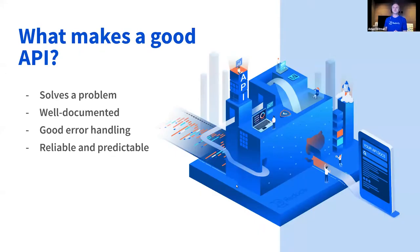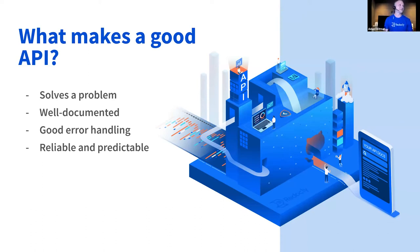So I'm going to start off with what makes a good API. The most important thing is an API needs to solve a problem. It has to be well-documented or else people can't use it, has to have good error handling, and it should be reliable and predictable — meaning someone should know what to expect. If they've started using one part of an API and move on to another part, they expect it to behave the same way, to be consistent.